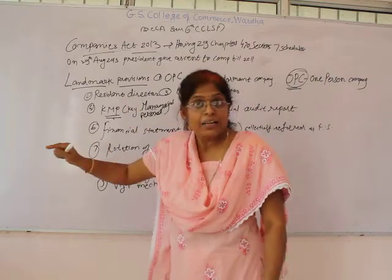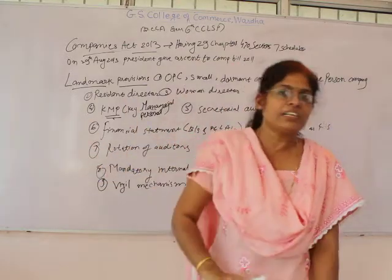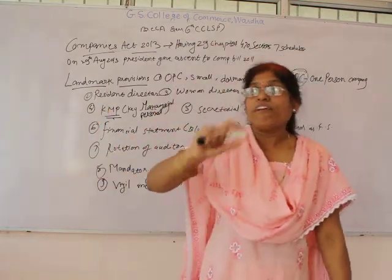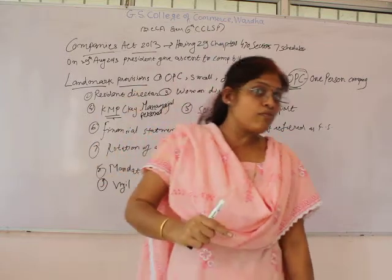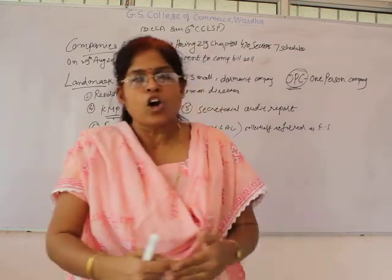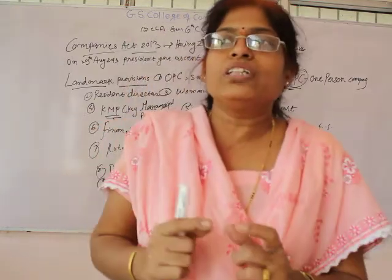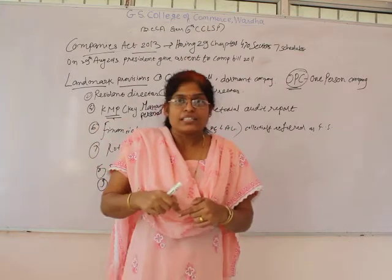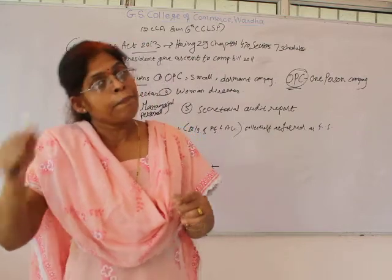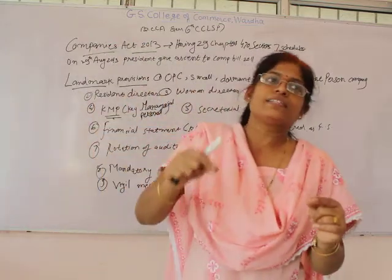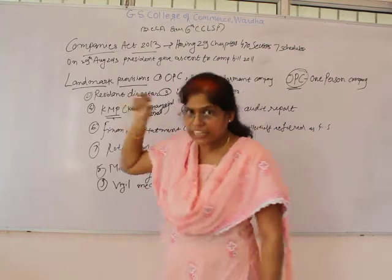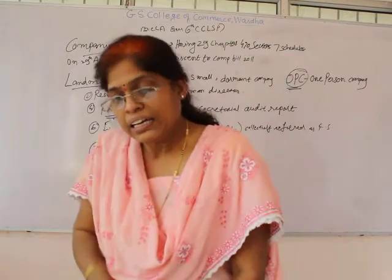Key Management Personnel may be in the form of MDs — Managing Directors — Chief Executive Officers, Chief Financial Officers, or Company Secretaries. Earlier, we were only aware about the CA — Chartered Accountant — but nowadays the CS, that is Company Secretary, has equal importance in business. If an individual is a CS and holds a CS degree, he can be called a Key Management Personnel in the company.